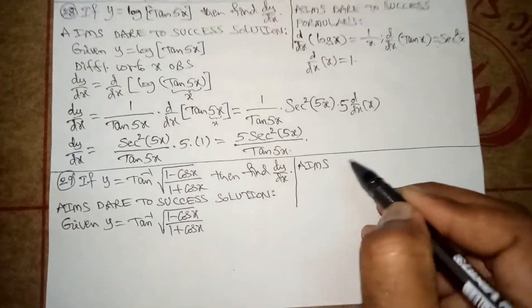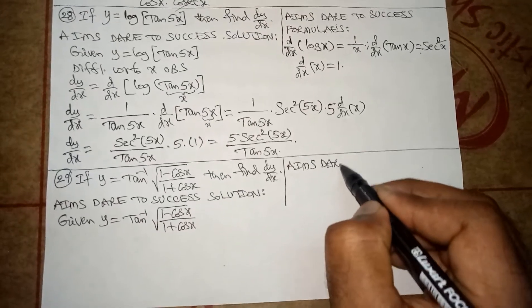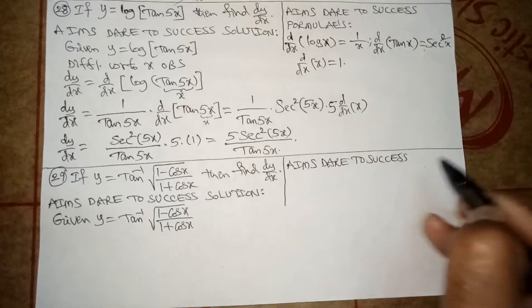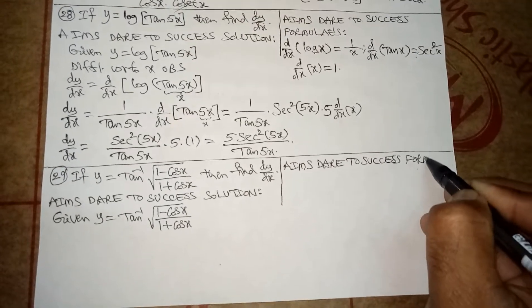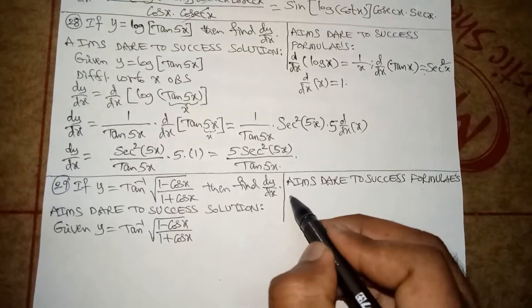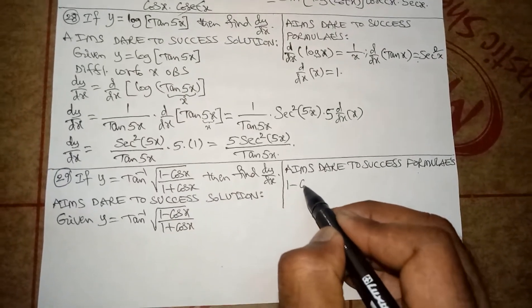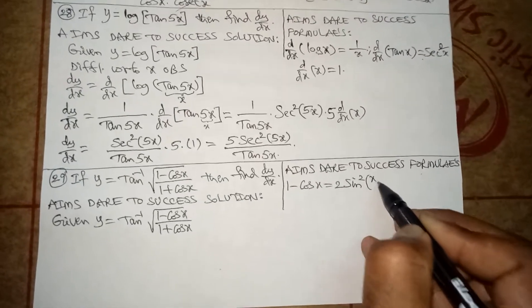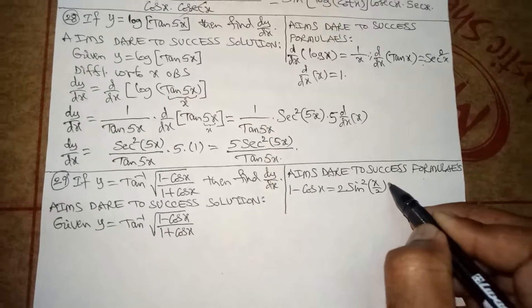Now I am writing formulas. Aims dare to success formulas, trigonometry formulas. 1 minus cos x is 2 sine square(x by 2). Next one: 1 plus cos x is 2 cos square(x by 2).